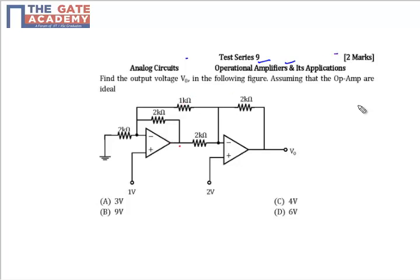In the question we can see that we have a two stage op-amp network with ideal op-amps. Ideal op-amps satisfy the virtual ground property, so voltage of non-inverting terminal will be equal to the voltage of the inverting terminal. In the non-inverting terminal we have 1 volt and 2 volt supply, so voltage of the inverting terminal will also be 1 volt and 2 volt.